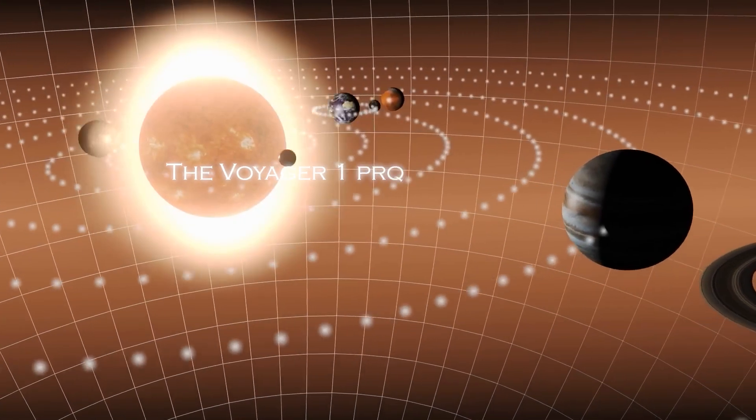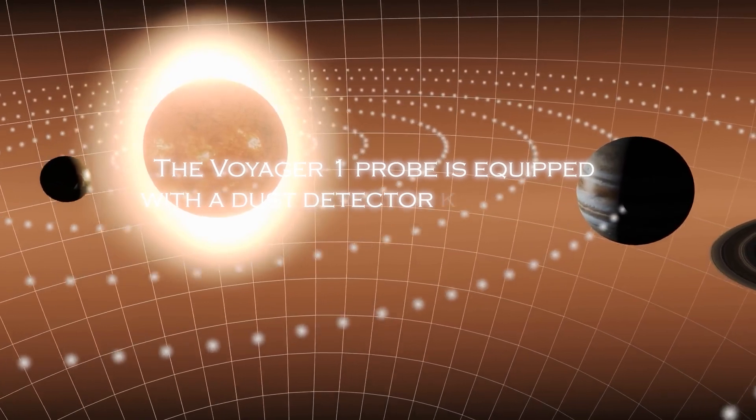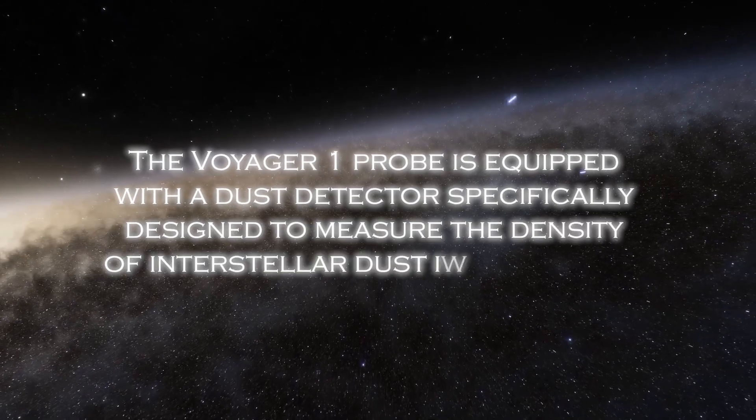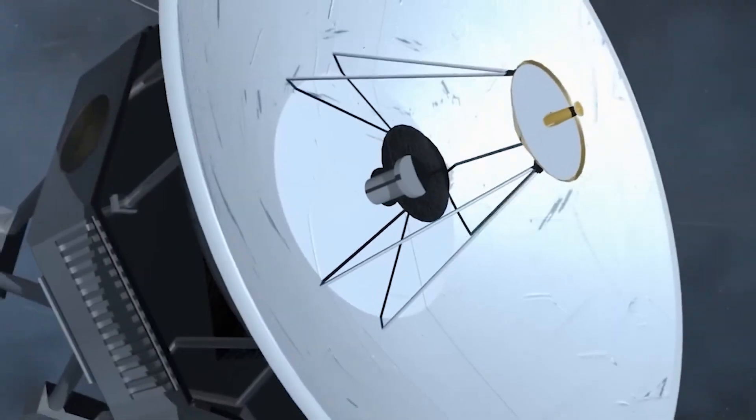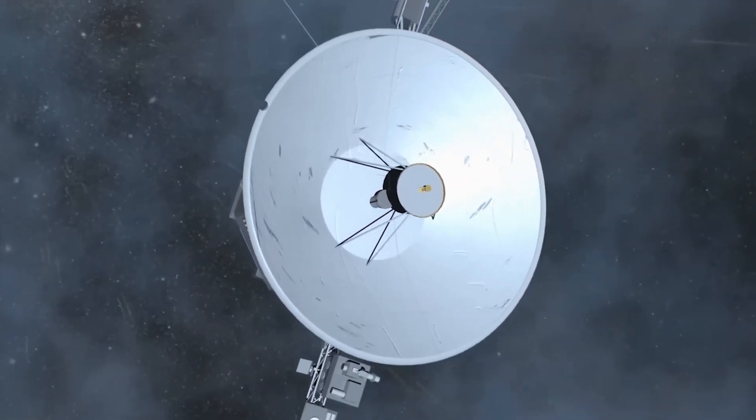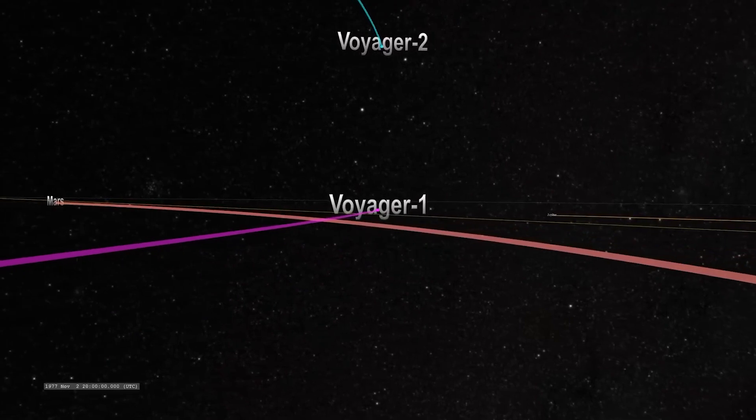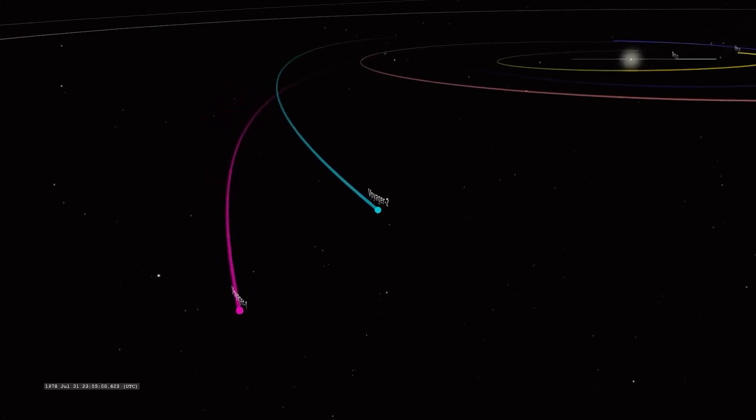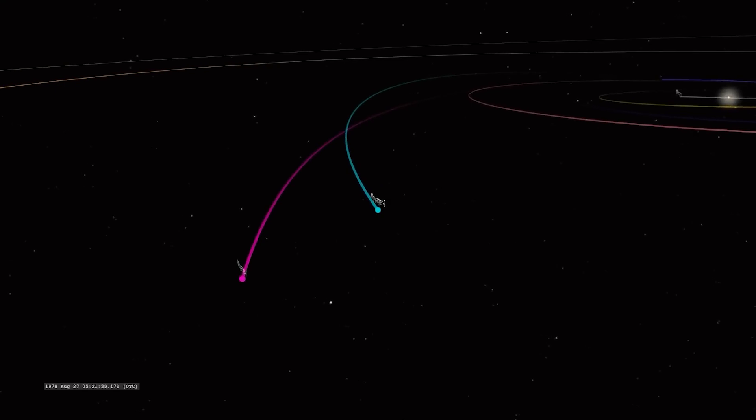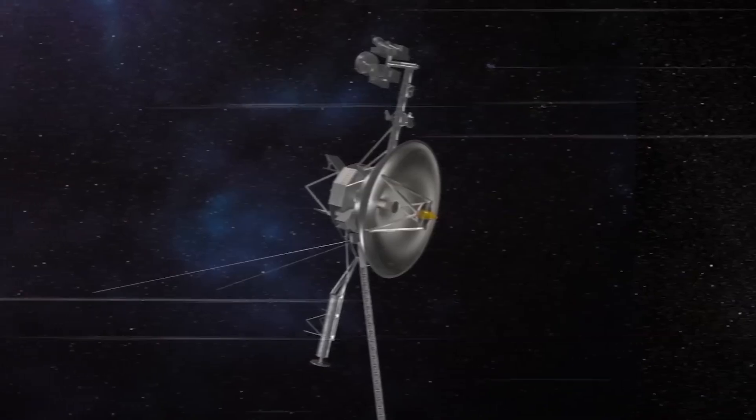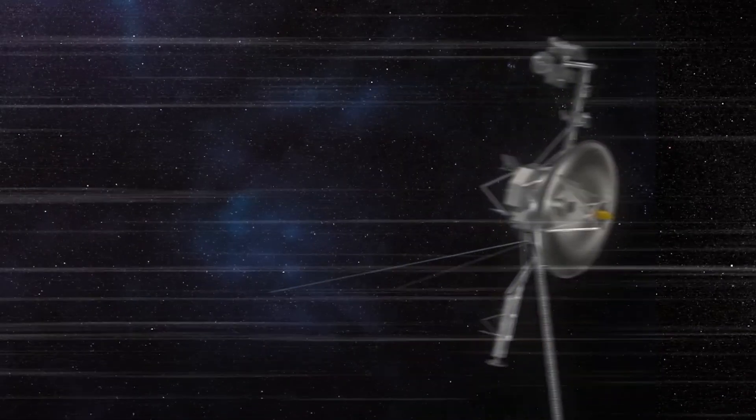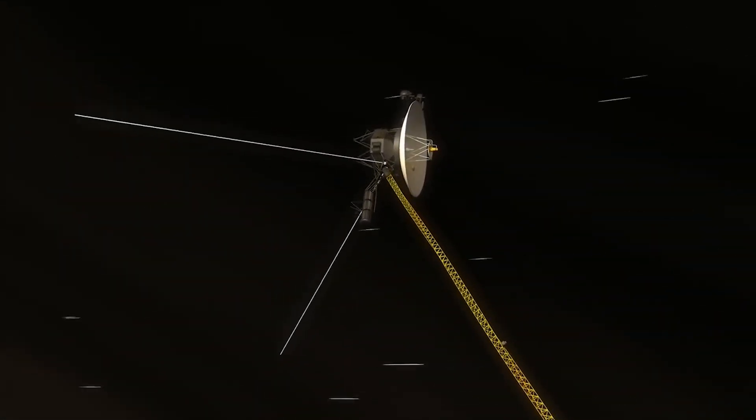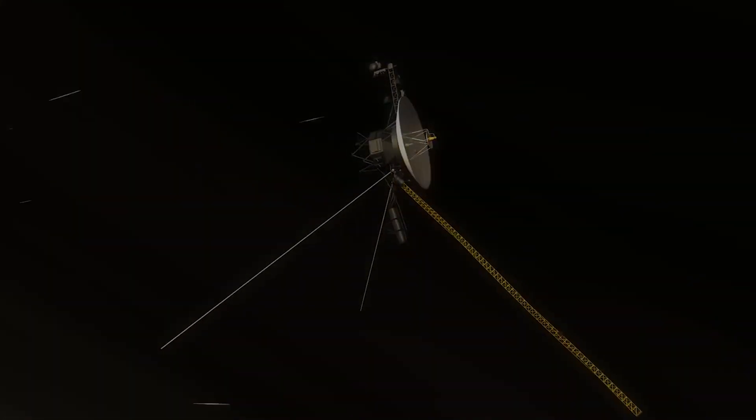The Voyager 1 probe is equipped with dust detectors, specifically designed to measure the density of interstellar dust in deep space. However, communication with Voyager 1 has become more difficult due to the limited resources NASA's global antenna system has to receive the mission signals. This has resulted in less frequent communication opportunities. Despite this, a fascinating discovery recently emerged in the data stream.